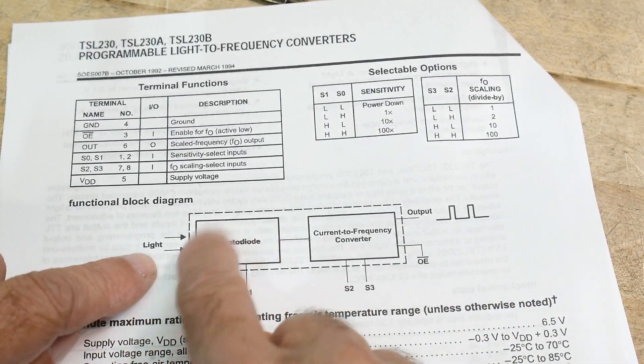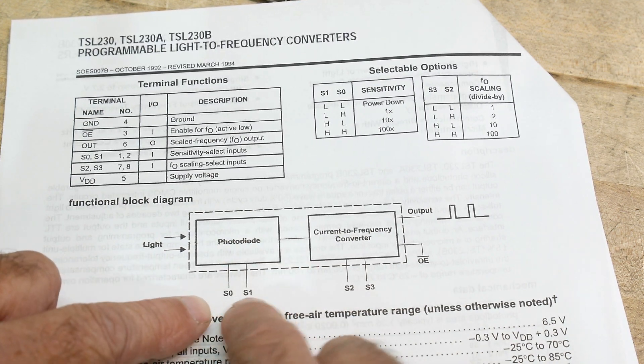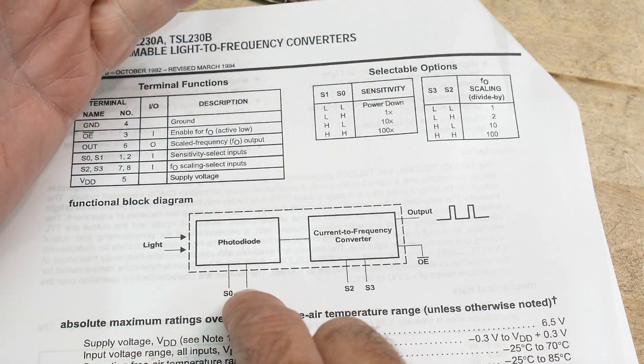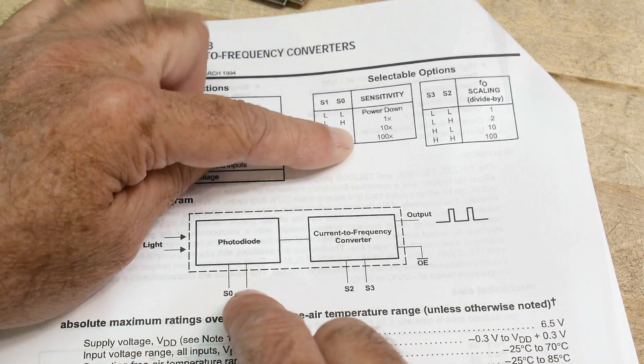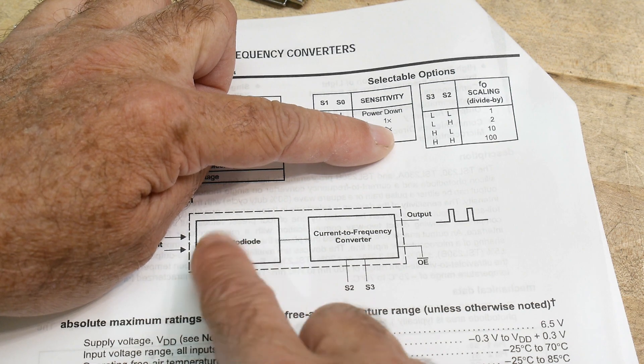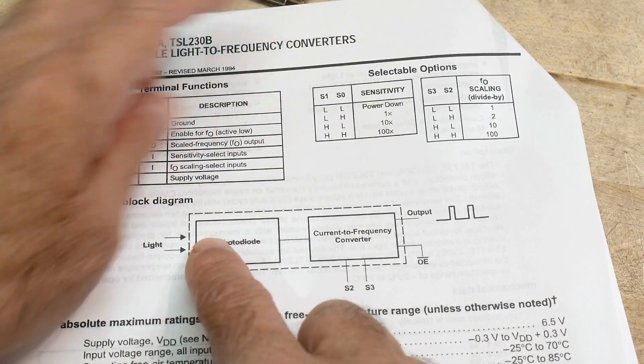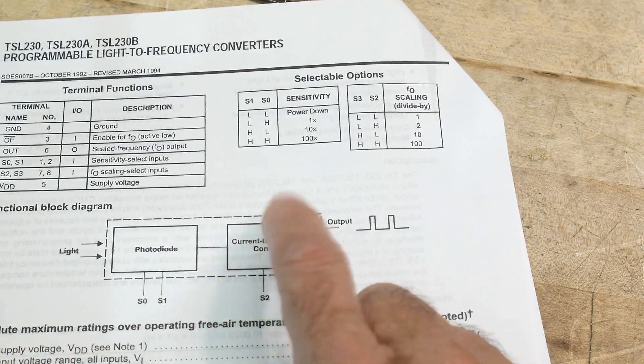So light comes into a photodiode and there's two programmable chips here. These two chips set sensitivity. If they're both low it turns it off. If it's low high it has a gain of one. You have a gain of 10 or a gain of 100.